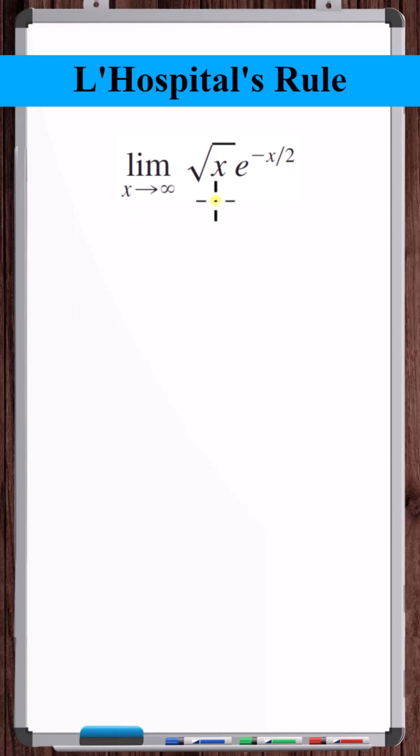What is the limit as x approaches infinity of the square root of x times e to the minus x over 2 power?